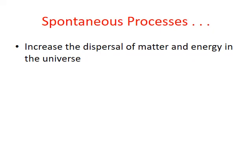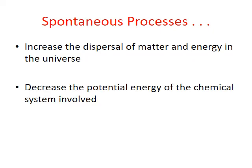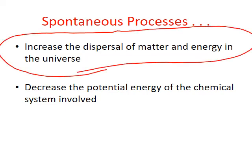It turns out that if a process is spontaneous under certain conditions, it does two things. First, all spontaneous processes increase the dispersal of matter and energy in the universe as a whole. Second, all spontaneous processes decrease the total potential energy of the chemical system involved. These are the driving forces in determining spontaneity for any process. Being able to quantify these will allow us to predict whether a process is spontaneous or not. In this PowerPoint we'll examine the first requirement, and in a later PowerPoint we'll look at changes in chemical potential energy.